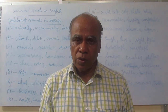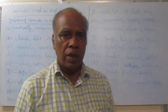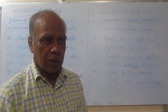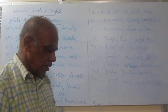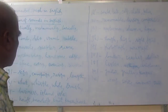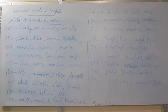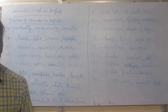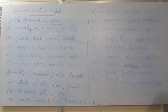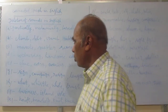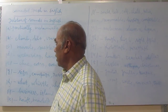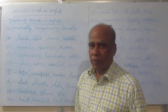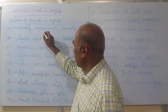A few sounds are deleted when native speakers speak — they delete some sounds. What are they? Let us discuss in this class. First, the vowel sound is deleted in certain words. For example, the 'a' sound: practically — it is not 'practically', it is 'practically'. And then mechanically — it is not 'mechanically', it is 'mechanically'.